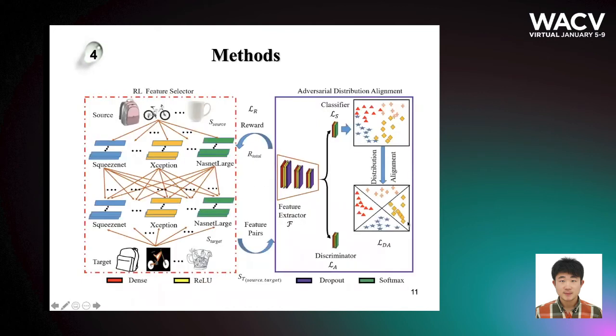Based on this idea, in our paper, we propose to use reinforcement learning as a feature selector so that we can find the best feature pairs, define the correlated reward, and then perform adversarial distribution alignment in our model. You can check the details of this diagram in the paper.